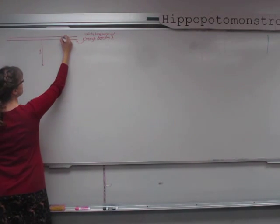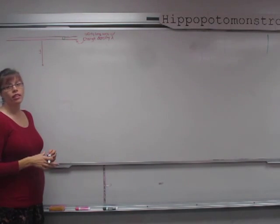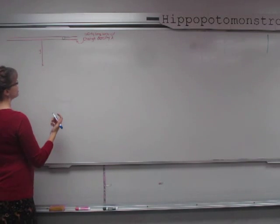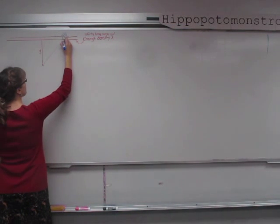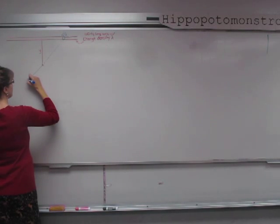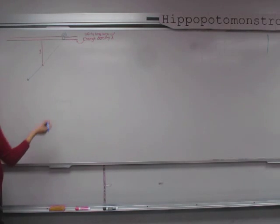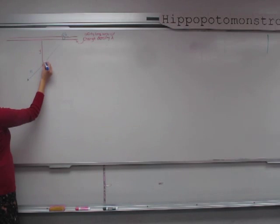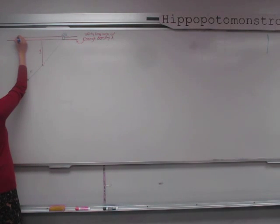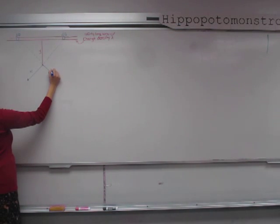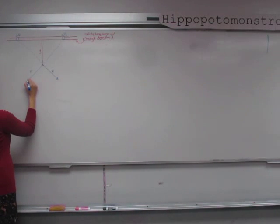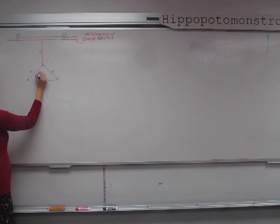The first thing we're going to do is look at how a little piece of that line affects the electric field at point x — the point we're interested in. This little piece has charge dq, and there is a symmetric dq on the other side of y, with an electric field symmetric to the first one.